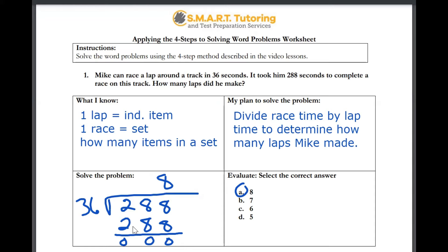The question reads: Mike can race a lap around a track in 36 seconds. It took him 288 seconds to complete a race on this track. How many laps did he make?